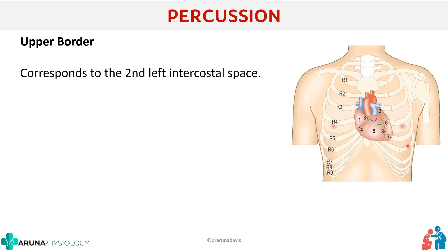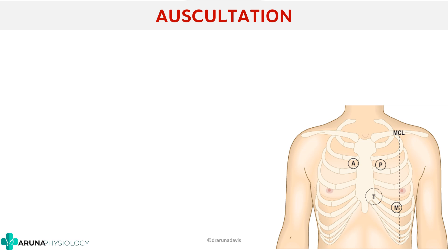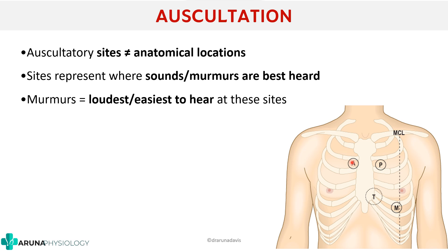We have now come to the last step, which is auscultation. There are four definite locations where we auscultate: the mitral area, tricuspid area, pulmonary area, and aortic area. Remember, auscultatory areas are not anatomical locations — they are simply the sites where the sounds are best heard. If there is valvular incompetence or valvular stenosis, those are best heard at these specific sites.